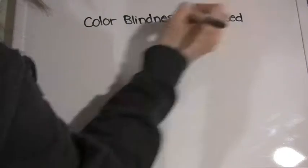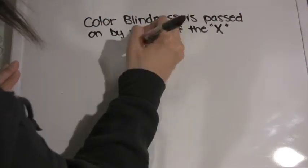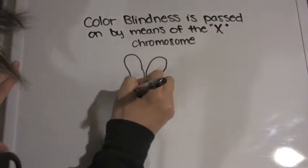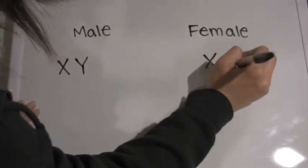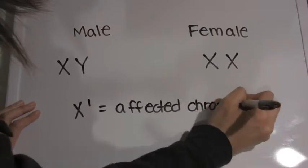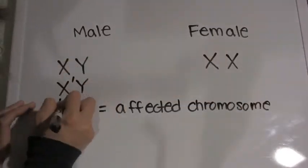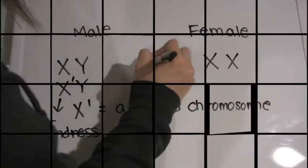Last but not least, colorblindness is passed on with the X chromosome. Males are more likely to be colorblind because they only have a single X chromosome. Females have two X chromosomes, so if one of them coded for colorblindness, the healthy chromosome would take over.